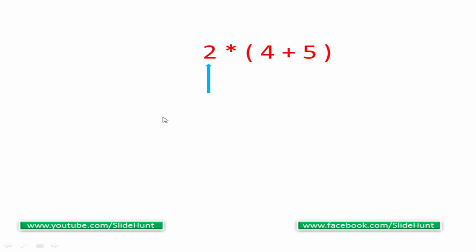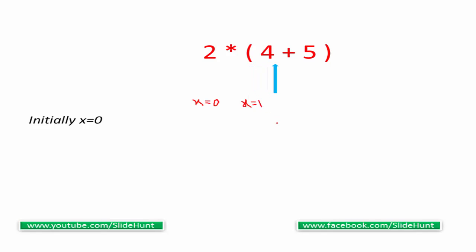Let's see an example. We take an expression and initially set x equal to zero. We scan left to right — when we encounter an opening parenthesis we increment x by one, so now x equals one. Then we encounter a closing parenthesis, so we decrement x by one. After decrementing, x equals zero. So this expression is balanced.